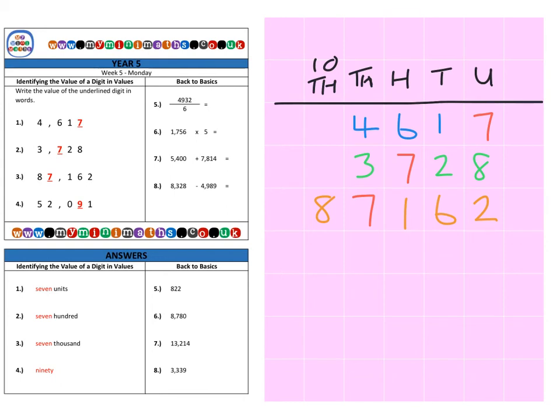And finally on to question four. Again a five digit number, and we have fifty two thousand, no hundreds, and ninety-one.